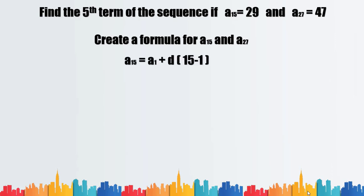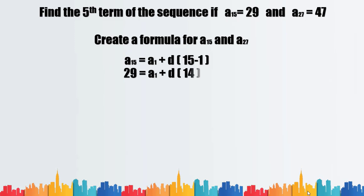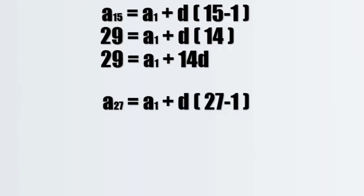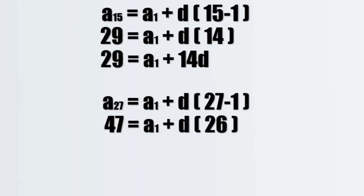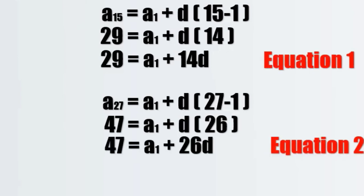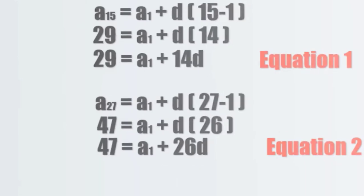For a sub 15: n equals 15 and a sub 15 equals 29. Substituting into the formula gives us: 29 equals a sub one plus 14d — this is equation 1. For a sub 27: n equals 27 and a sub 27 equals 47, giving us: 47 equals a sub one plus 26d — this is equation 2.